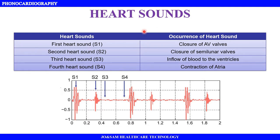For heart sounds, there are four heart sounds. The first heart sound is S1. We can see the waveform here. S1 is produced by the closure of the AV valves — the atrioventricular valves. These atrioventricular valves include the bicuspid as well as tricuspid valves.